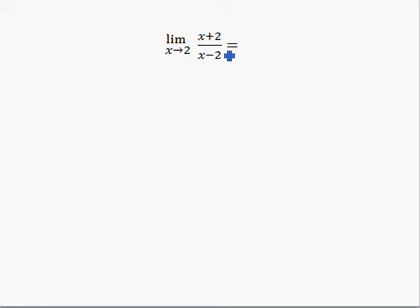Here when we try to plug in 2 for this limit, we get 4 over 0. So that does not mean undefined, it doesn't mean it does not exist. The function is undefined at 2, but the limit might not.